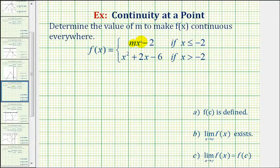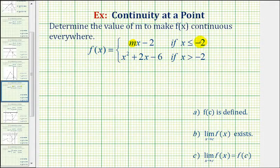We know that a linear function and a quadratic function by themselves are always continuous, which means to make this piecewise defined function continuous everywhere, we only have to make it continuous when x equals negative two.